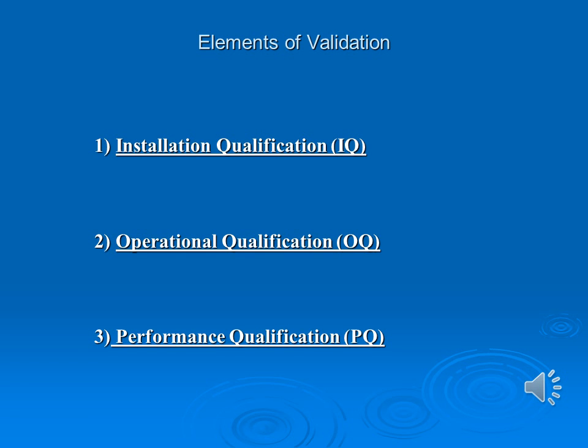All validations have three elements: IQ, OQ, and PQ. In retrospective validation, we do not have to perform these steps anew, but we use the existing data of IQ, OQ, and PQ to demonstrate that the process is validated.